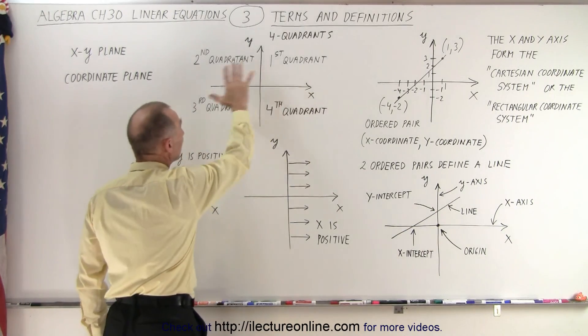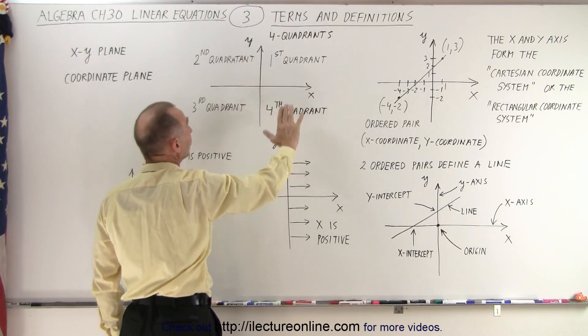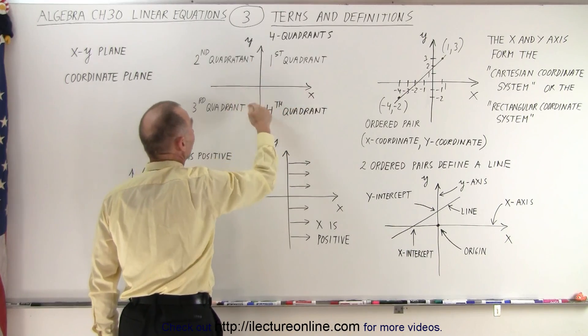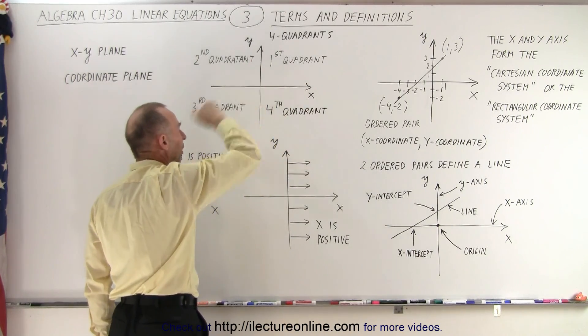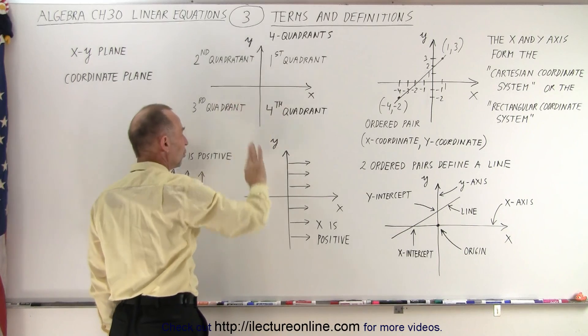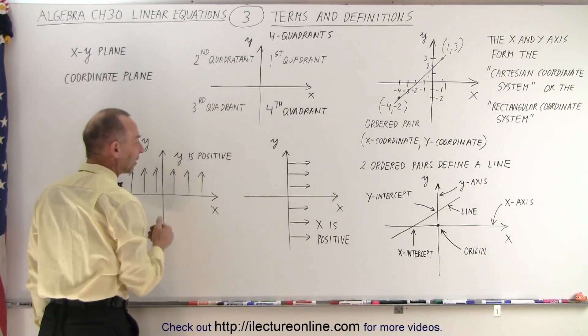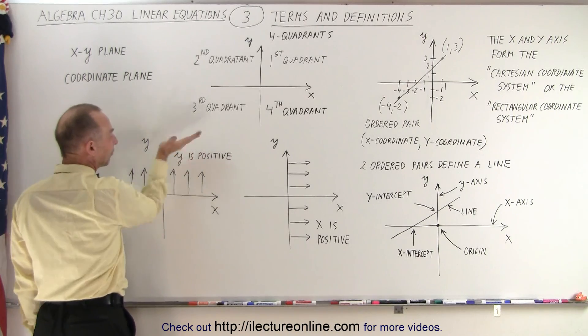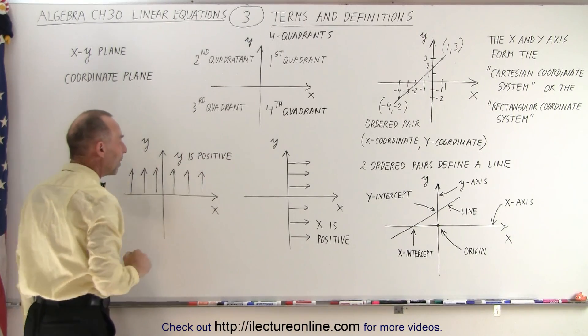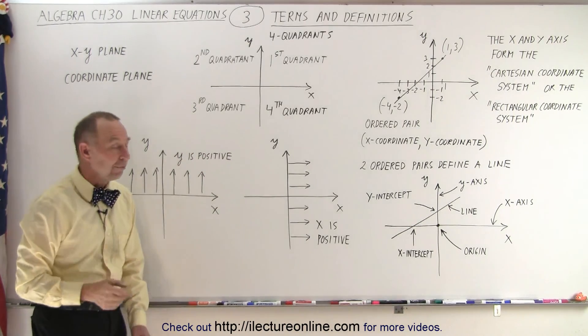Notice we divide the coordinate system into four quadrants. We have the first, the second, the third, and the fourth quadrant. Of course, we go around in a counterclockwise motion. Notice everything to the right of the y-axis is positive for the x-values. Everything above the x-axis gives you a positive value for the y-value.